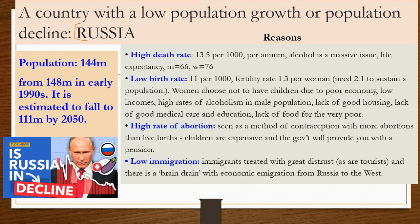Our case study for low population growth rate is Russia. Russia's total population is around 144 million, down from 148 million in the early 1990s — a drop of 4 million. It is estimated to fall further to 111 million by 2050.